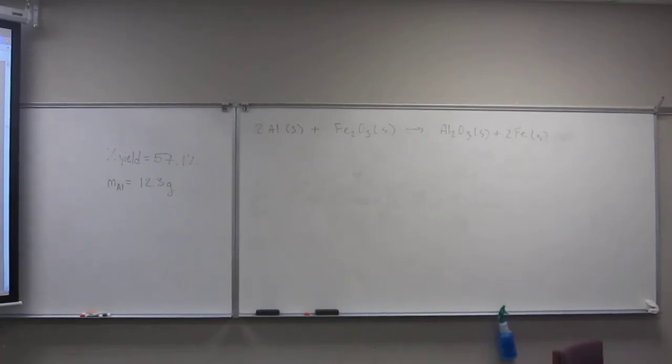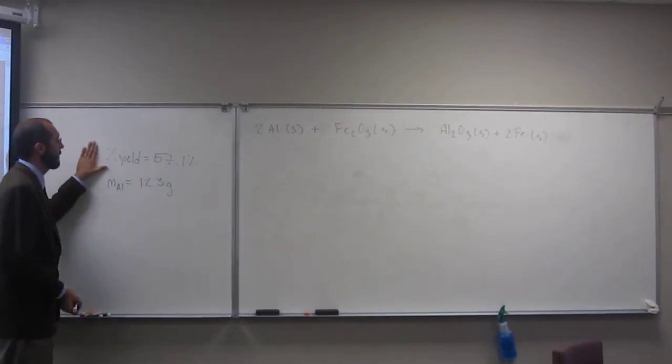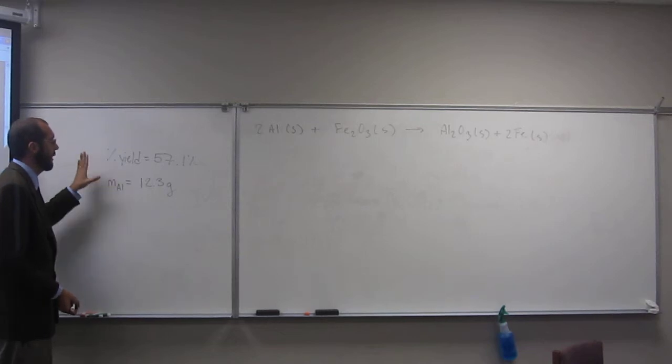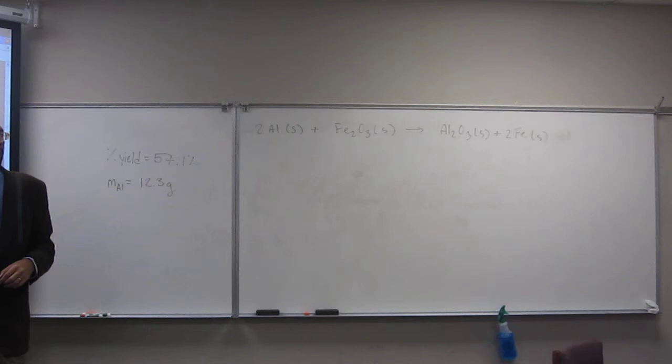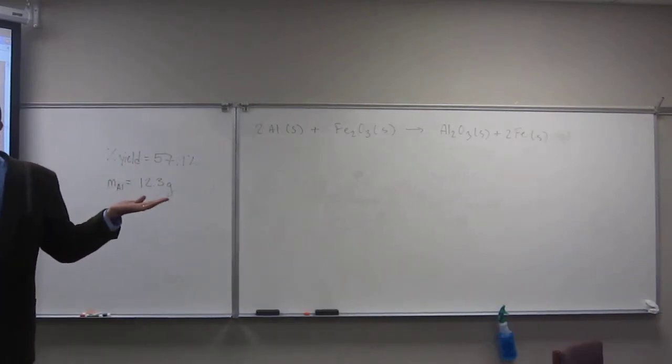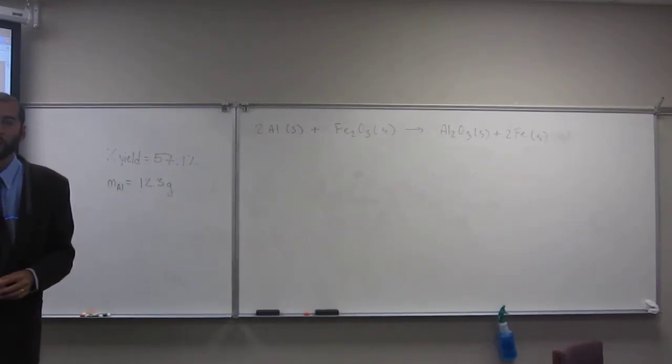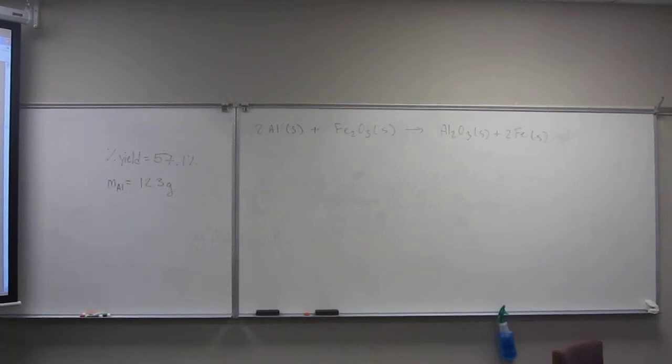Okay, so let's do this one here, this reaction, and figure out if the yield of this reaction is only 57.1%, and we started with 12.3 grams of aluminum, what's the mass of iron that we would have after the reaction is over? How would we do that?